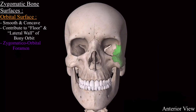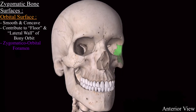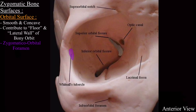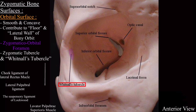In the complete skull model, the frontozygomaticus suture is visible. Just below this suture on the orbital surface, a tubercle is present called the zygomatic tubercle, also called the vitinal tubercle. This tubercle is important because important structures of the eye are attached to it.